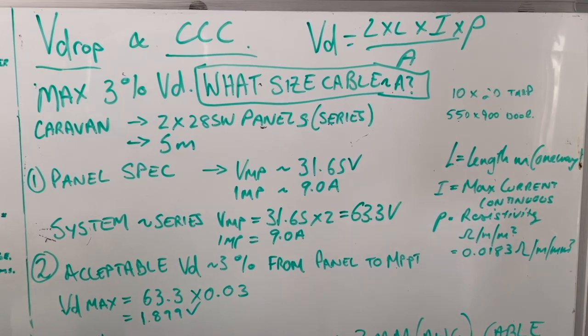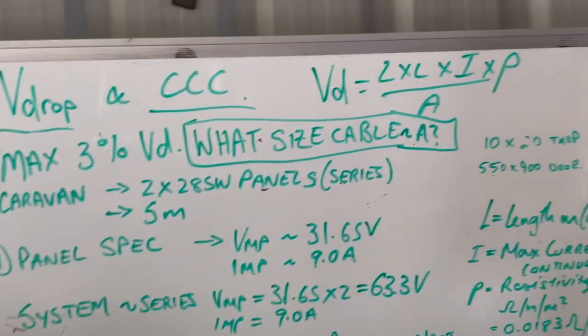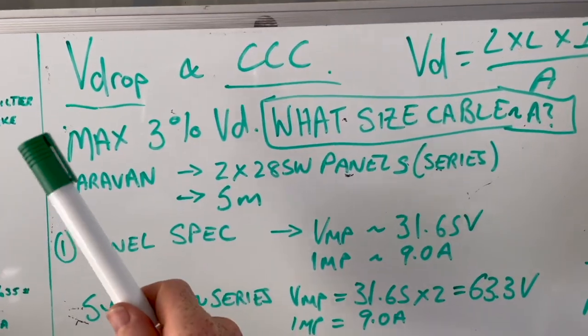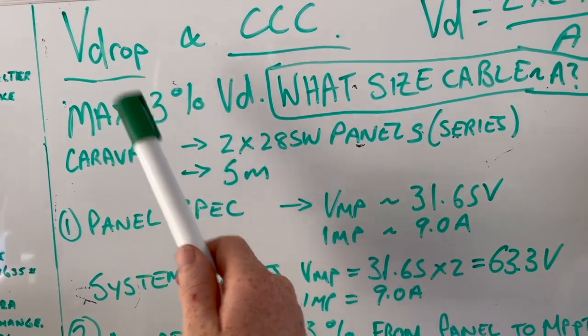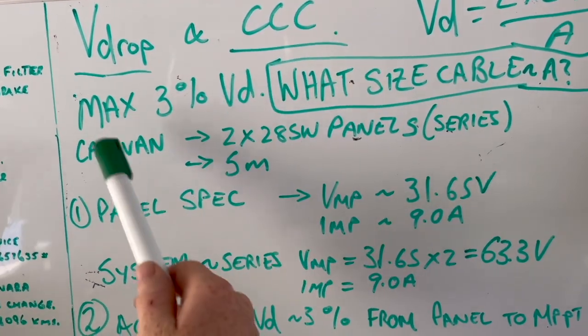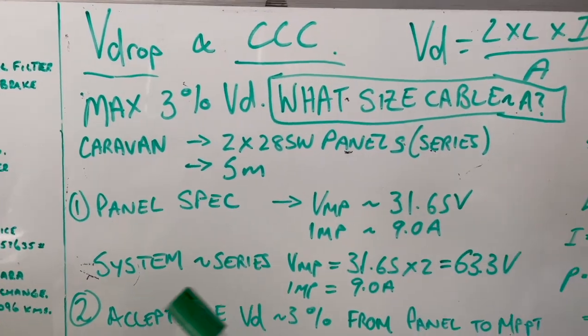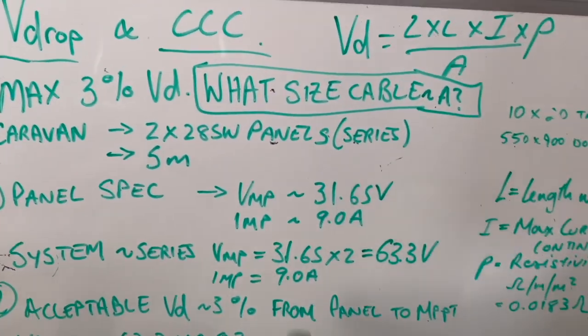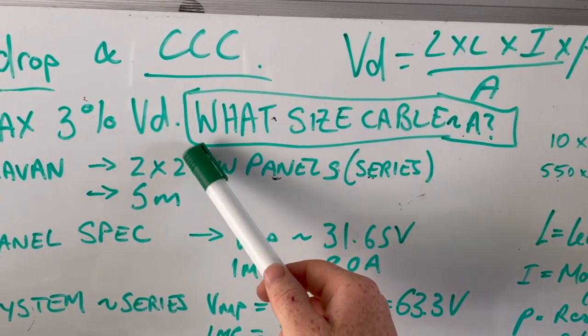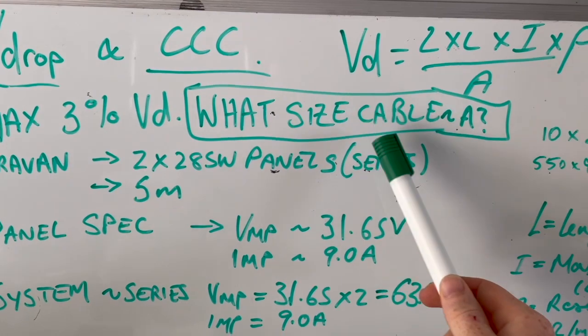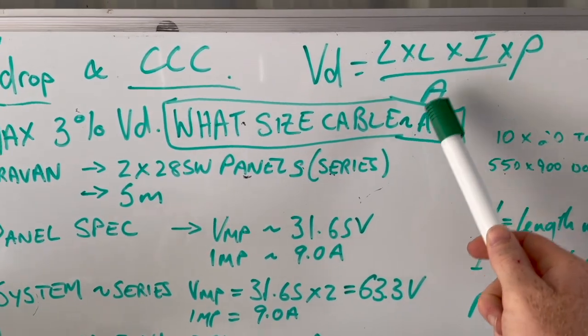So I've done some quick math. Maximum 3% voltage drop. That's the maximum acceptable voltage drop for a system from your solar panel to your MPPT. So the question I want to work out is what size cable do I need, which is area, that's A.